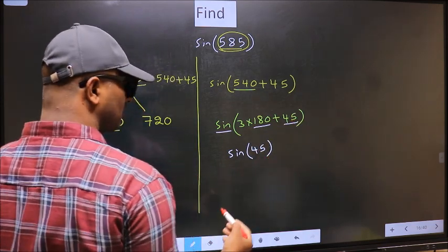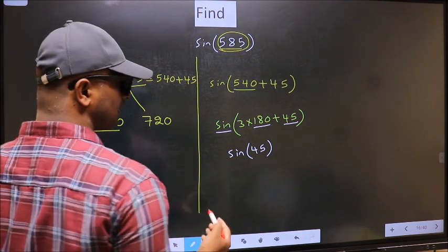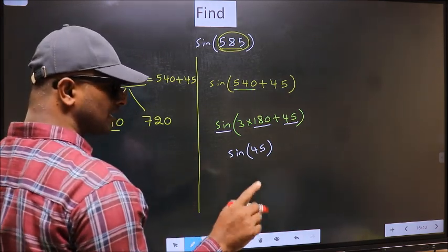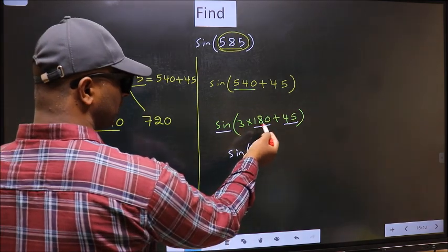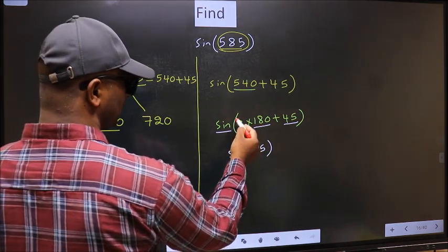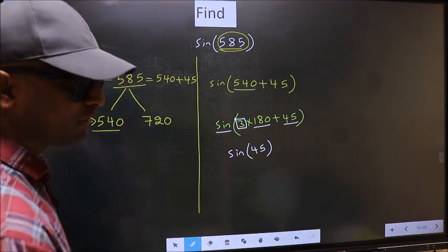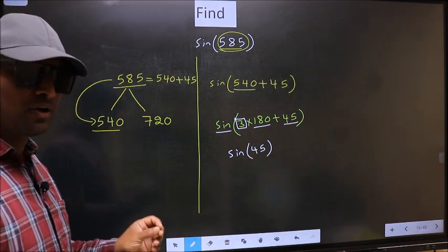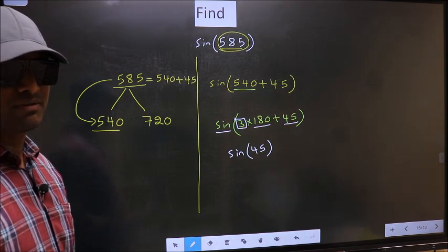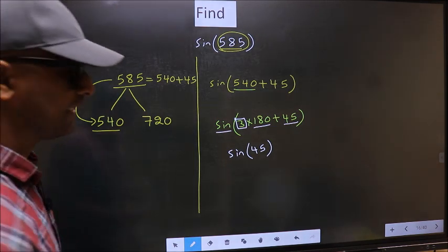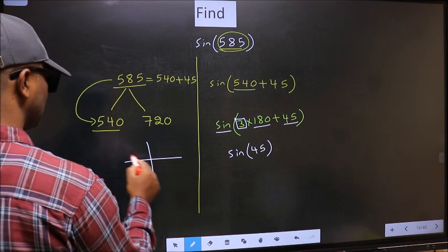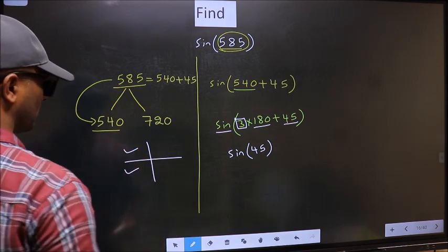Now, the question is, will we get here plus or minus? To answer that, we should look at the number before 180. That is 3. And 3 is odd. And all the odd multiples of 180, they lie either in the second or in the third quadrant.